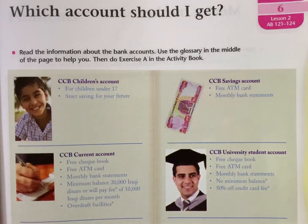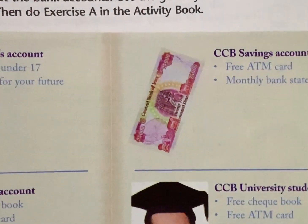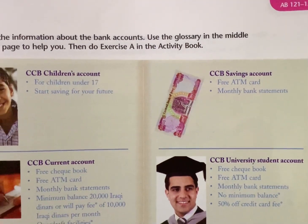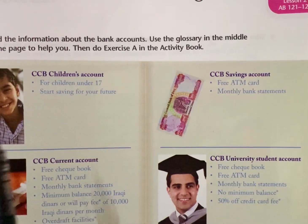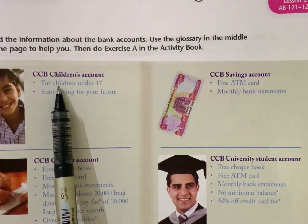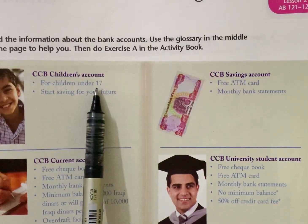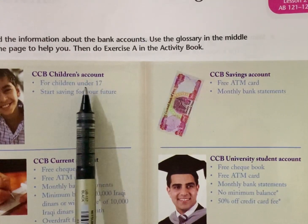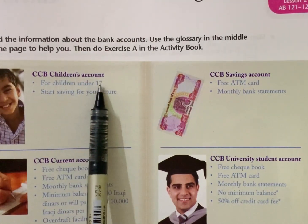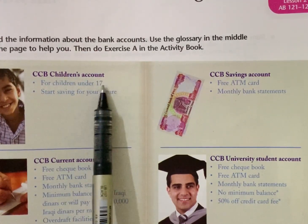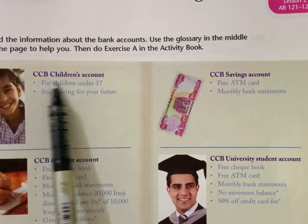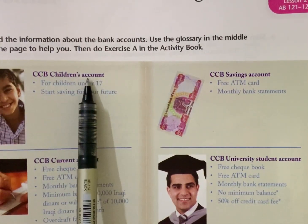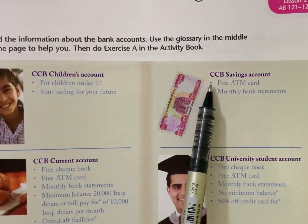CCB Children's Account — حساب الأطفال — for children, للأطفال under 17. اللي تحت سن 17. إذن كل طفل تحت 17 يكون عنده حساب يسمى Children's Account.